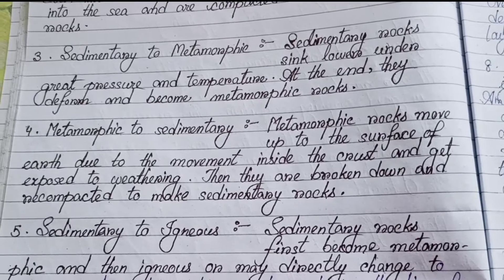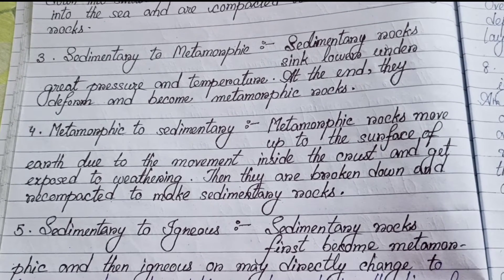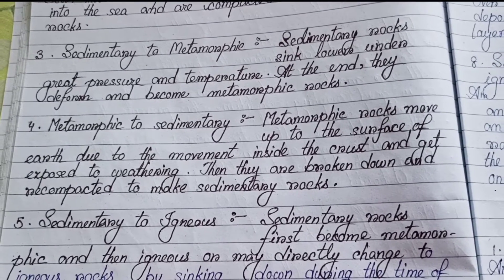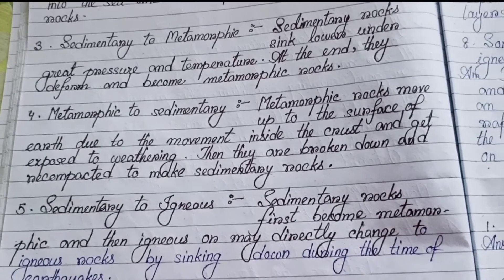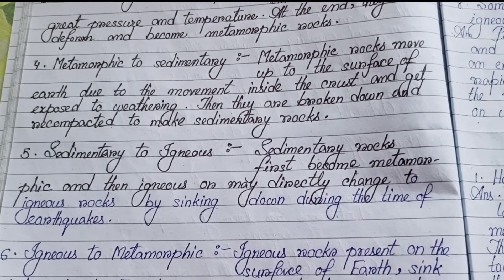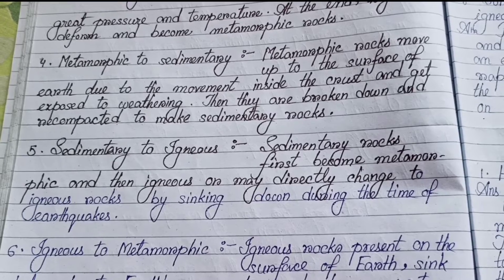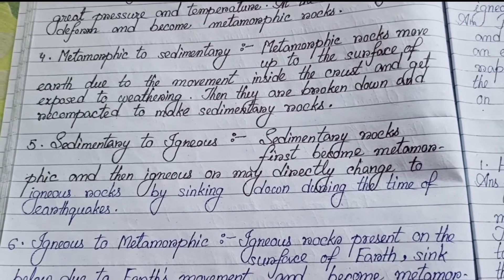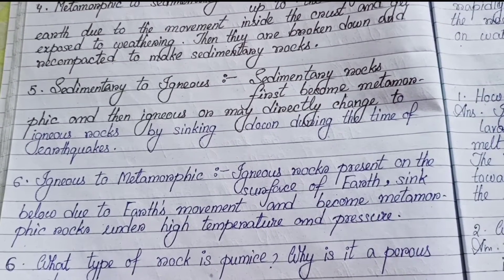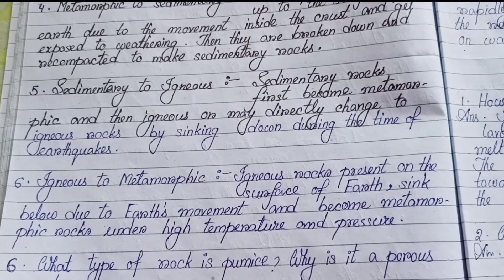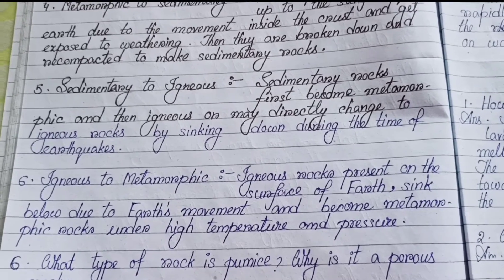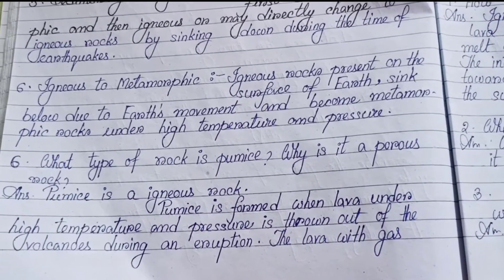(4) Metamorphic to Sedimentary: Metamorphic rocks move up to the surface due to movement inside the crust, get exposed to weathering, are broken down, and recompacted to make sedimentary rocks. (5) Sedimentary to Igneous: Sedimentary rocks first become metamorphic and then igneous, or may directly change to igneous rocks by sinking during earthquakes. (6) Igneous to Metamorphic: Igneous rocks on the surface sink below due to earth's movement and become metamorphic rocks under high temperature and pressure.